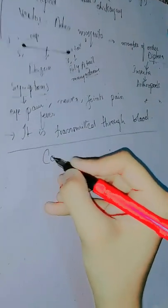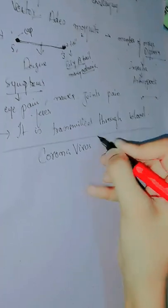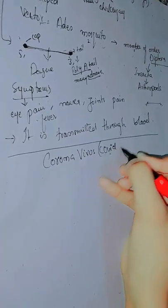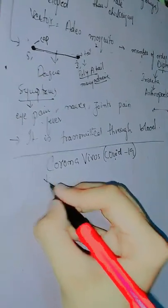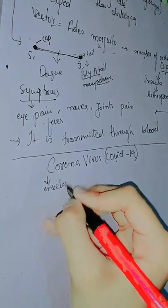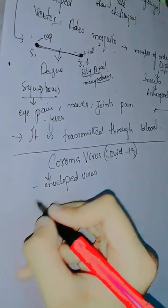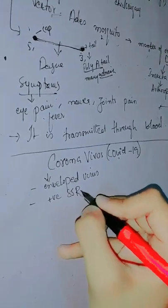Now we are going to discuss another virus, the coronavirus known as COVID-19. COVID-19 is basically an enveloped virus, and if we talk about genetic material, it has a positive single-stranded RNA.